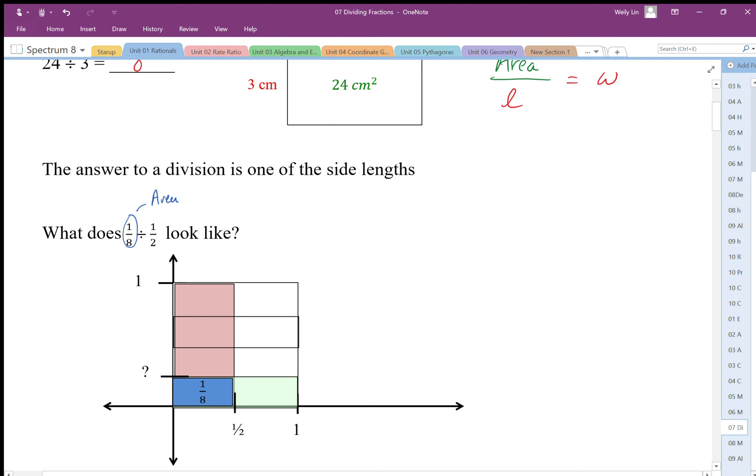Looking at our area picture, we can see clearly that the answer must be ¼. We can see that divisions of four along the vertical give us the answer to this division, so we get ⅛ divided by ½.